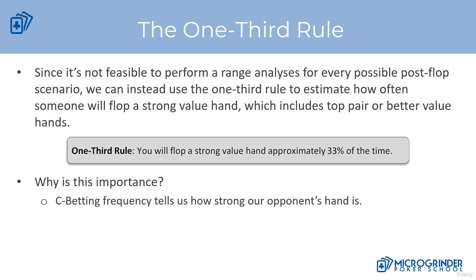Since performing range analysis on different board textures with different pre-flop raising ranges really isn't that feasible for a lot of people, and because this is a beginner's course, there's a more simplified approach that we can also take to understanding the strength of our opponent's hand when they're c-betting, and that's by utilizing the one-third rule.